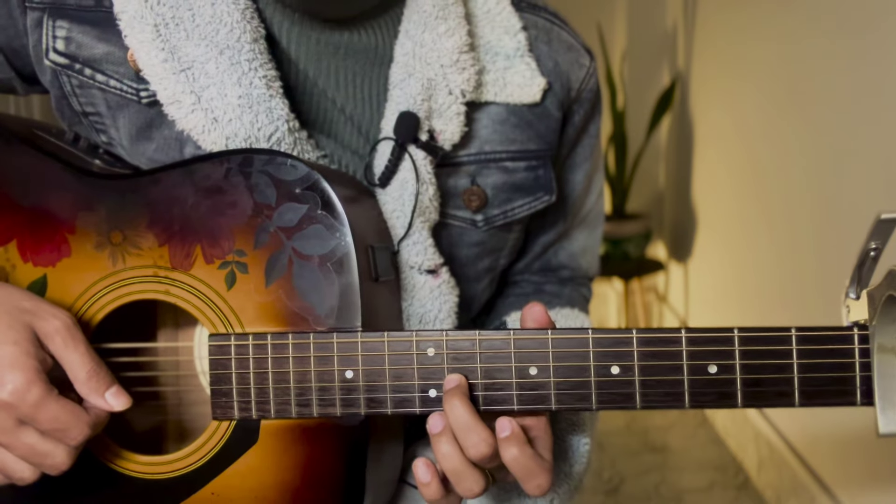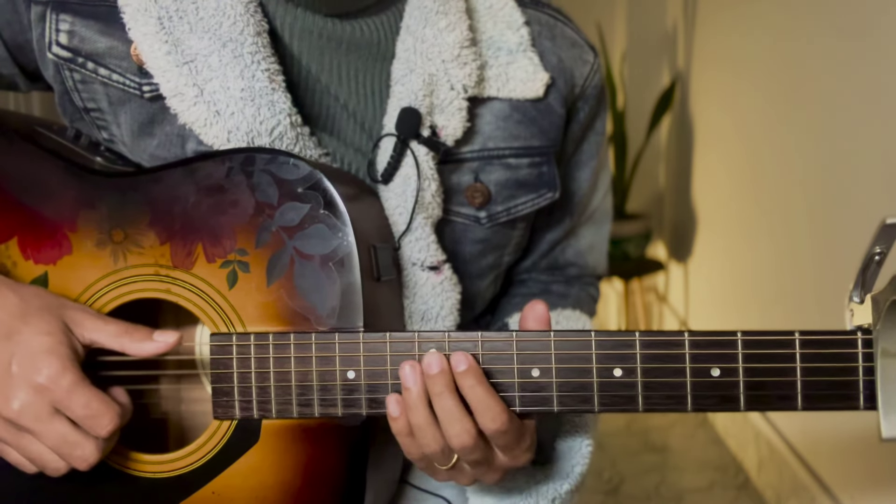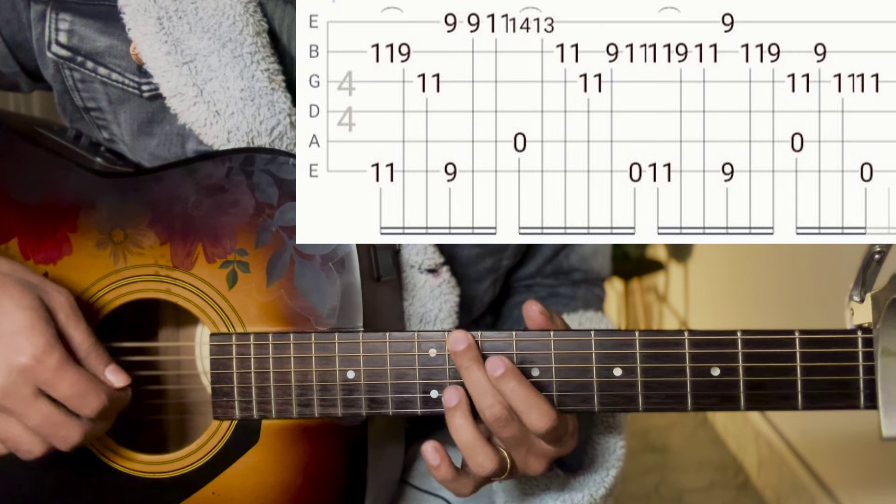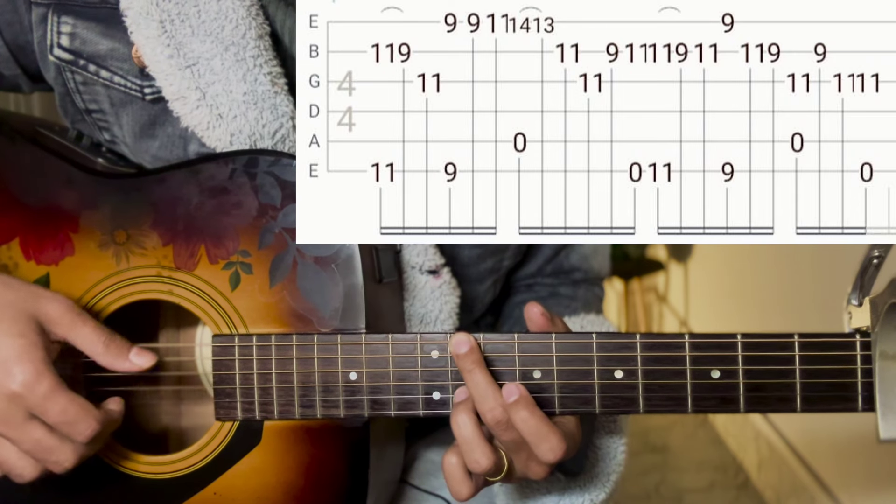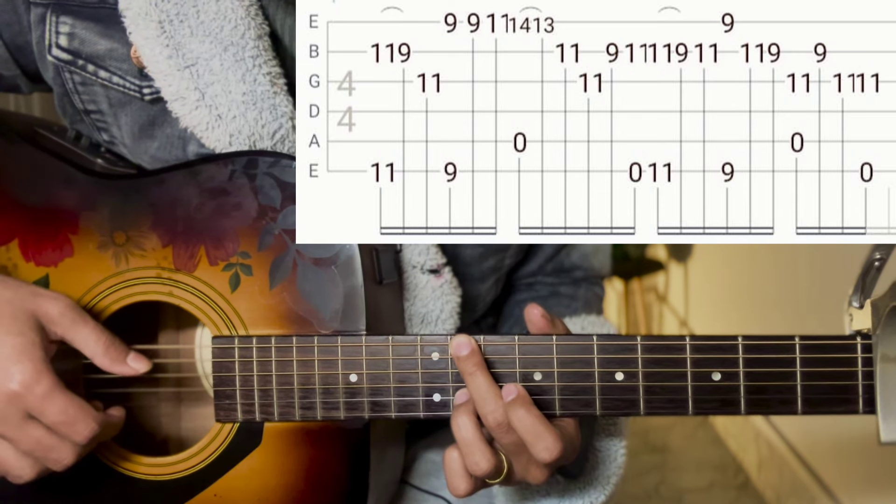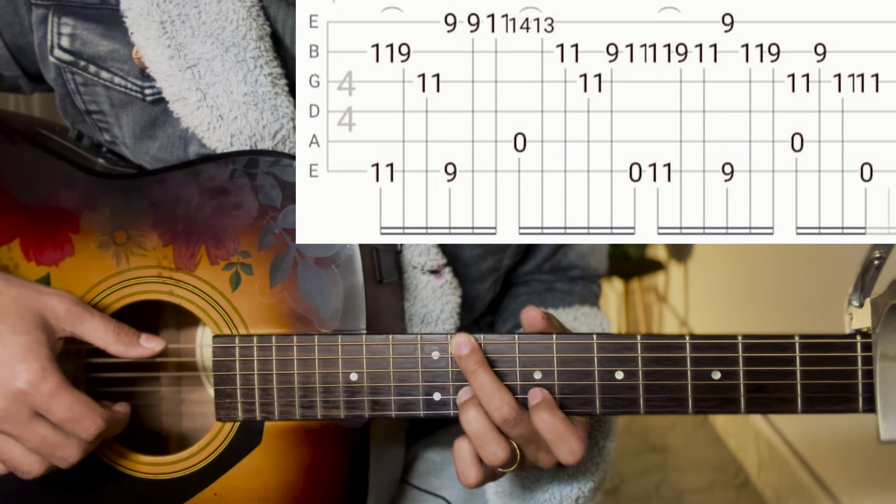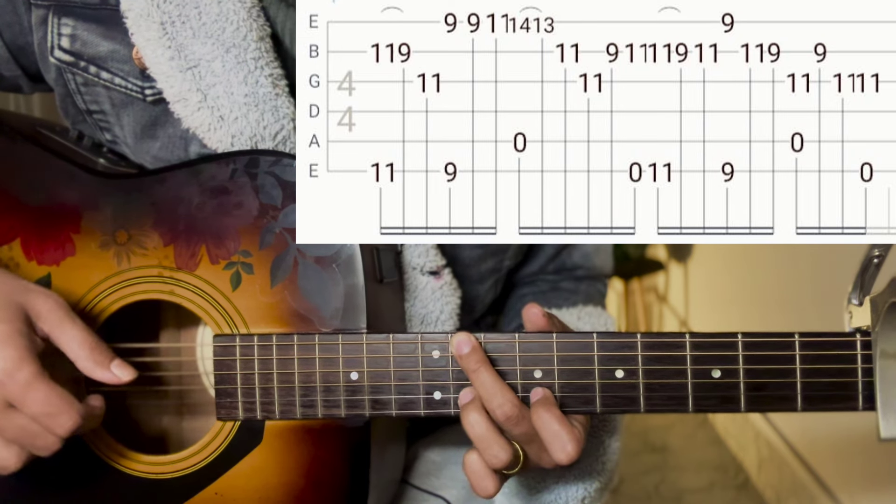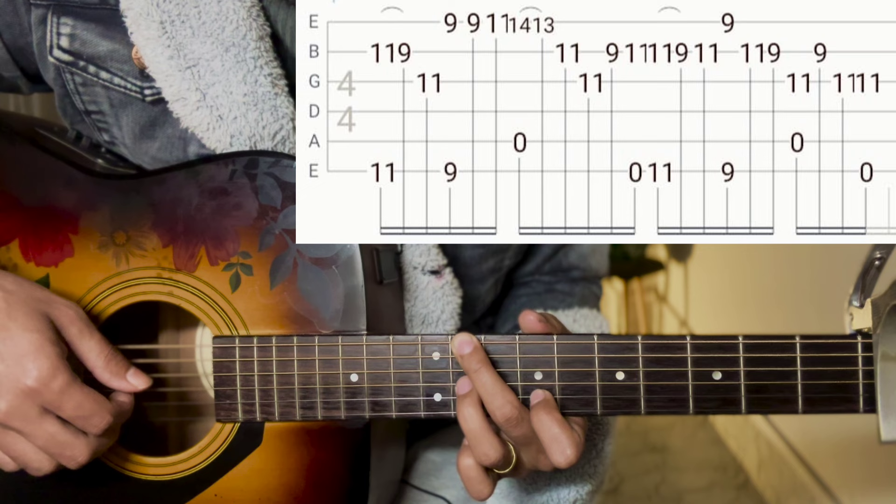I will press the 6th string 11, 2nd string 11, and press the C sharp scale. Then do a pull-off and press the third string 11 and press the pin.